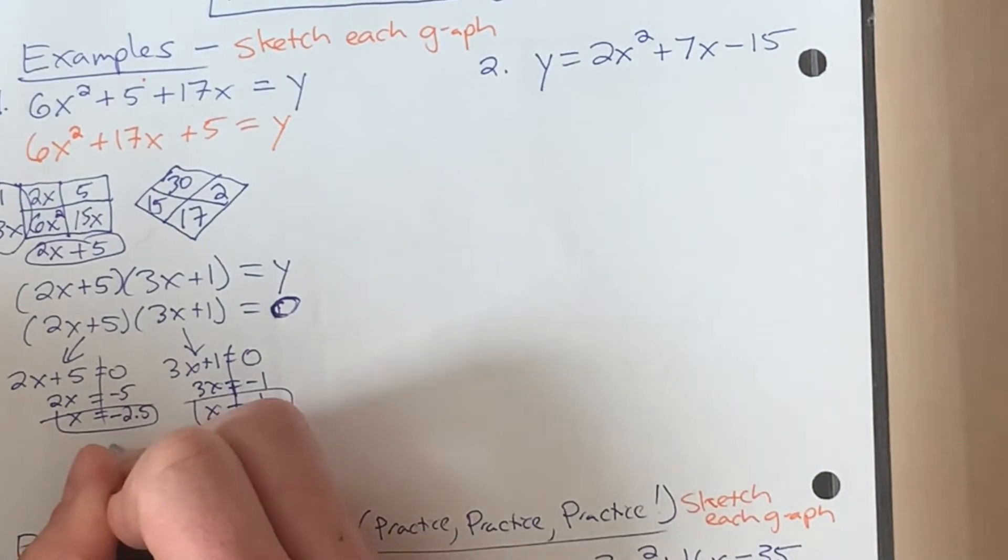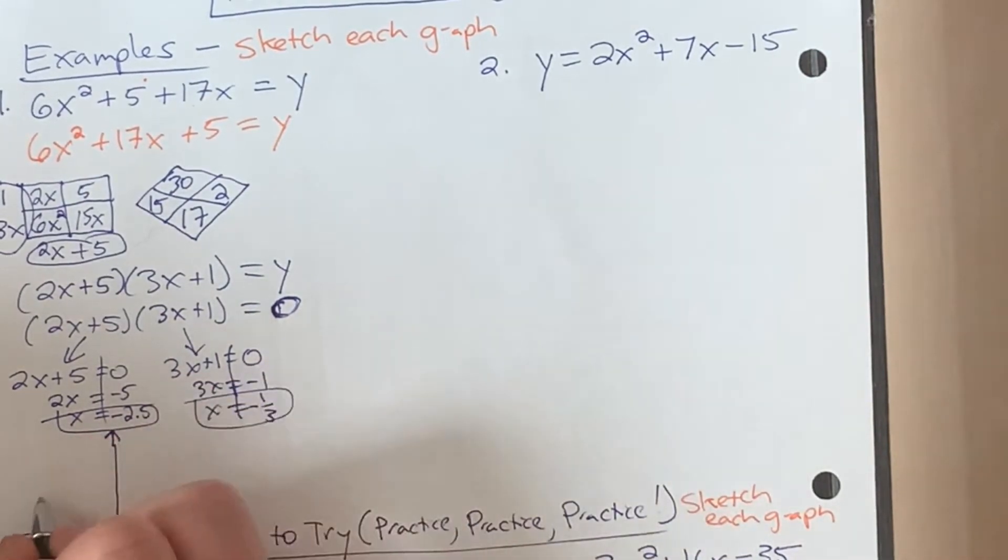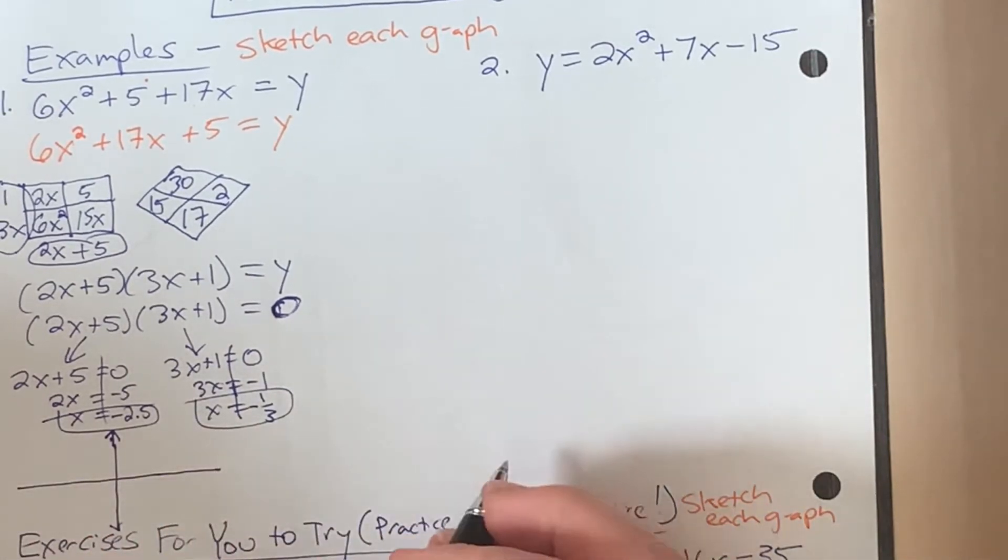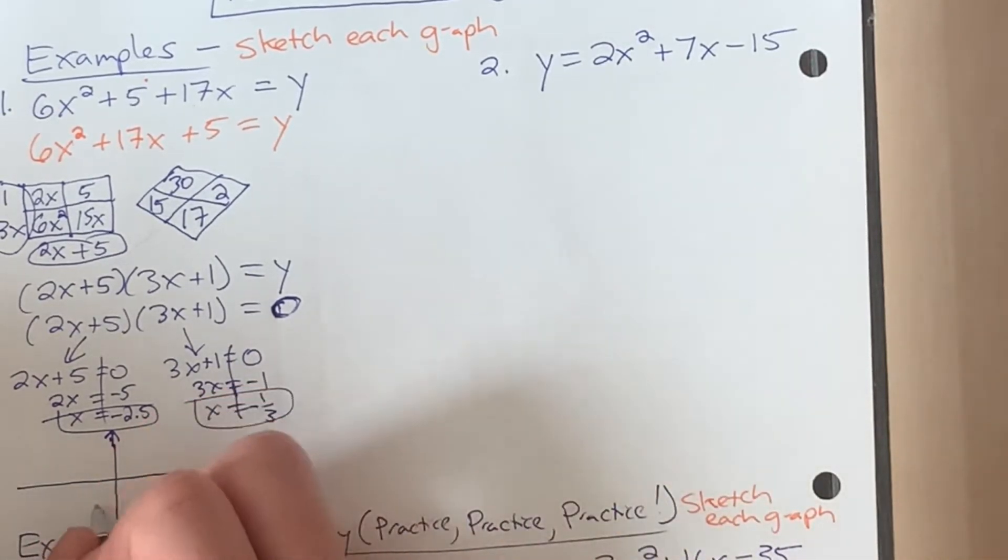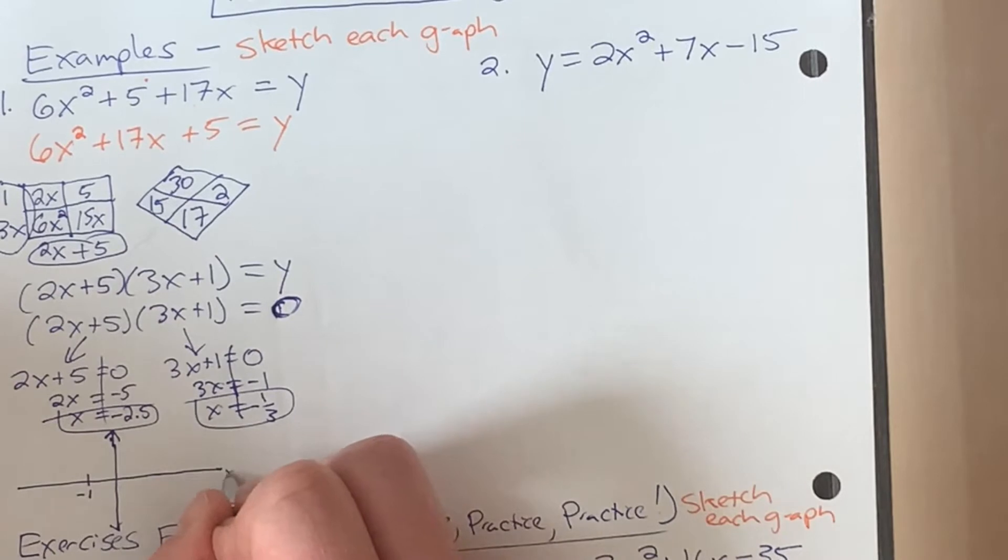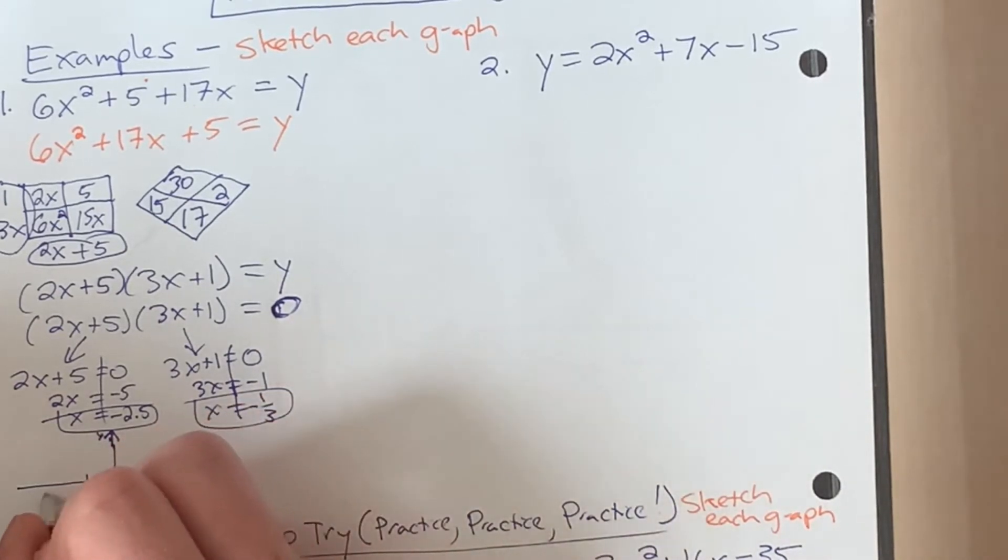We can sketch out our graph now. This is going to be pretty close. They're pretty darn close together, this one. And so I'll scale it up pretty big here. So I'm gonna go all the way, negative 1. Let's put negative 1 right here, x-axis, y-axis right here. And let's put negative 2 right here, and negative 3 right here.